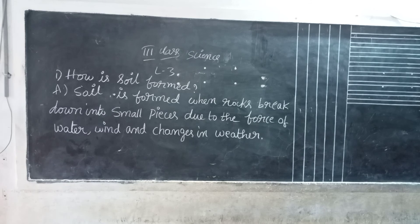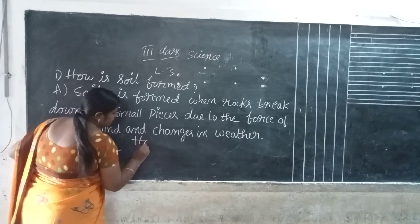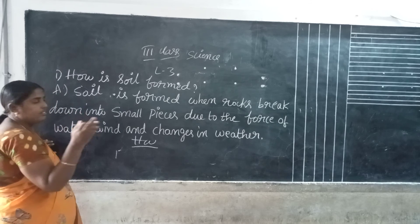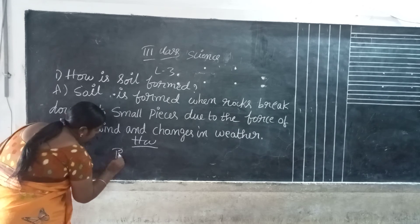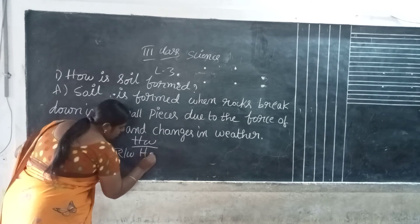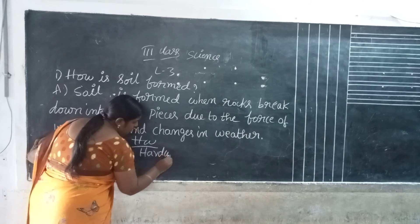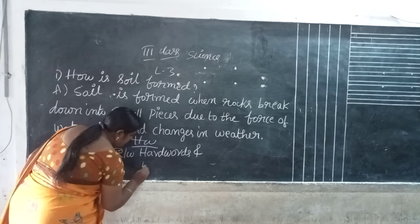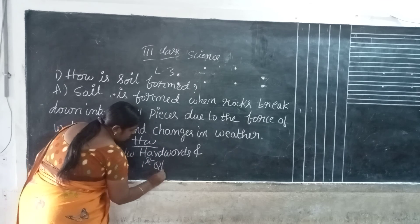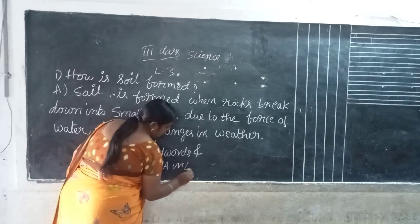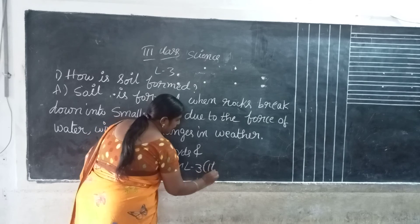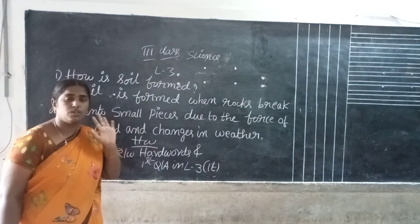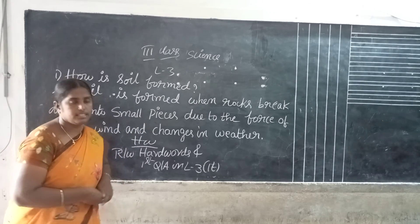Now, five more hard words and the first two questions — read and write. Hard pause. And the first two questions in lesson number three. One time, read the first two questions and the five hard words. Thank you.